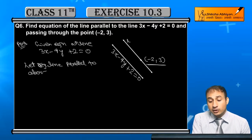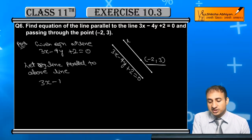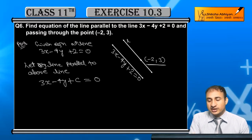What parallel to above line means is the x and y coefficients are equal. 3x minus 4y, but only the constant value will change. This is the required line.